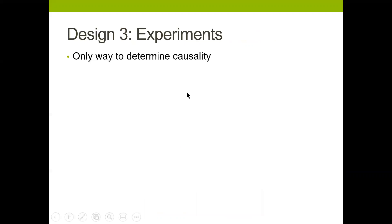The only way to determine causality is to conduct an experiment. In general terms, an experiment is a situation in which we try to control every aspect of the environment so that the only thing that could affect the outcome we're looking at is the factor of interest. If we're looking at whether giving causes happiness, we would try to control every single thing and then expose subjects to something to determine if they're happier.